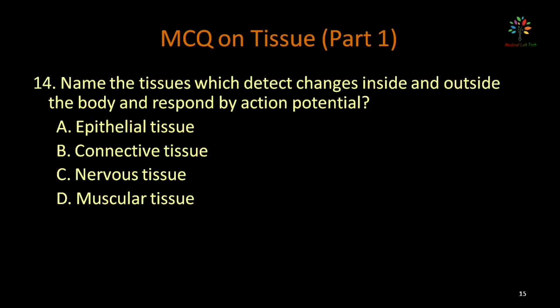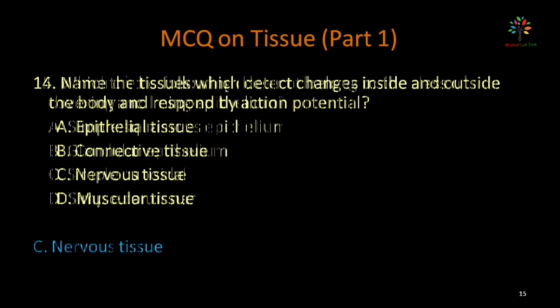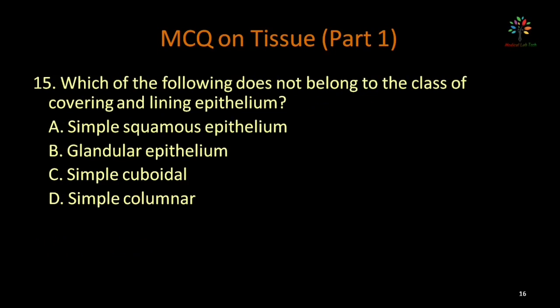Name the tissue which detects changes inside and outside the body and responds by action potential — options: epithelial tissue, connective tissue, nervous tissue, muscular tissue. Nervous tissue can detect changes inside and outside the body and respond by action potential. Correct option is nervous tissue.